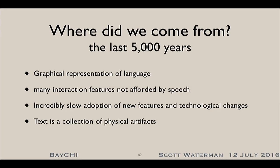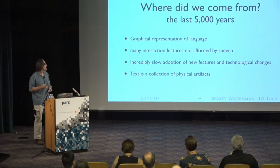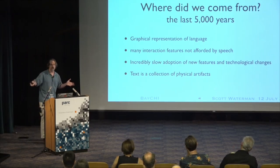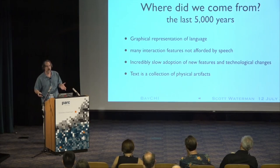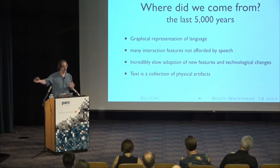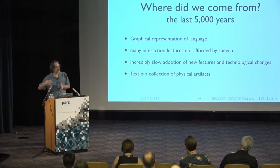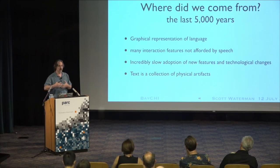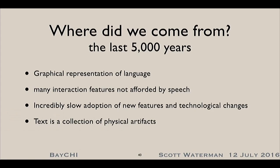So to recap the last 5,000 years: we had a graphical representation of language, which was a huge invention, but on its own it only looked like speech. As people recognized all of the interaction features that don't look like speech — the atemporal, nonlinear nature of it, the indexical nature of it — we slowly adopted technological features of text that allow us to do new things. And it became a giant collection of physical artifacts which we need to keep track of. So where do we get to now? Now is really defined by the last 100 years.